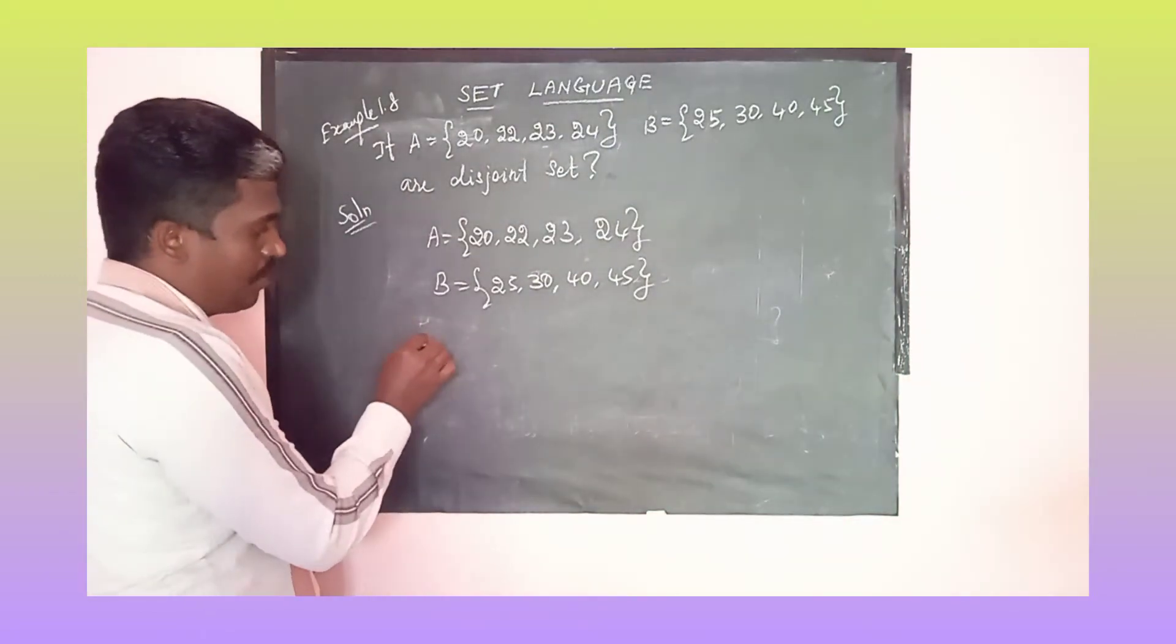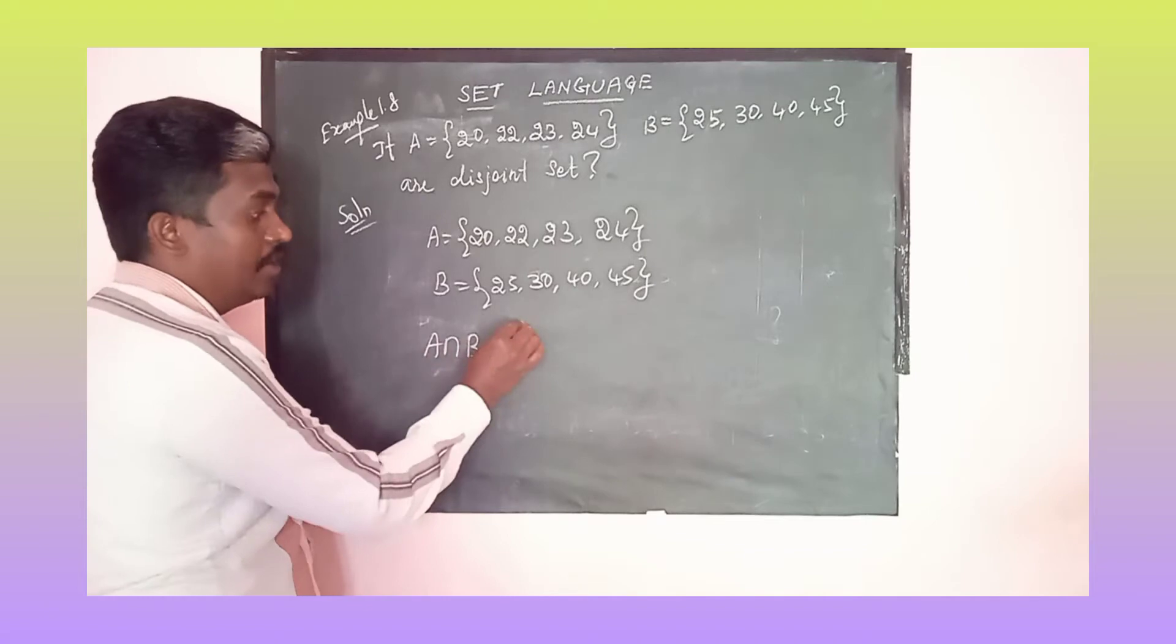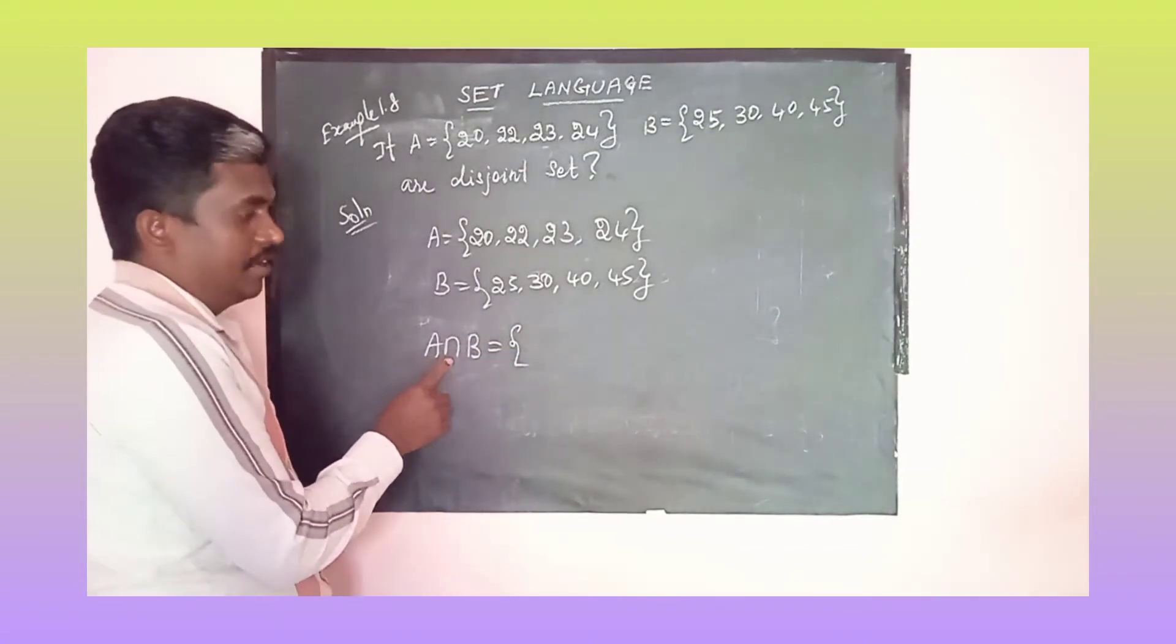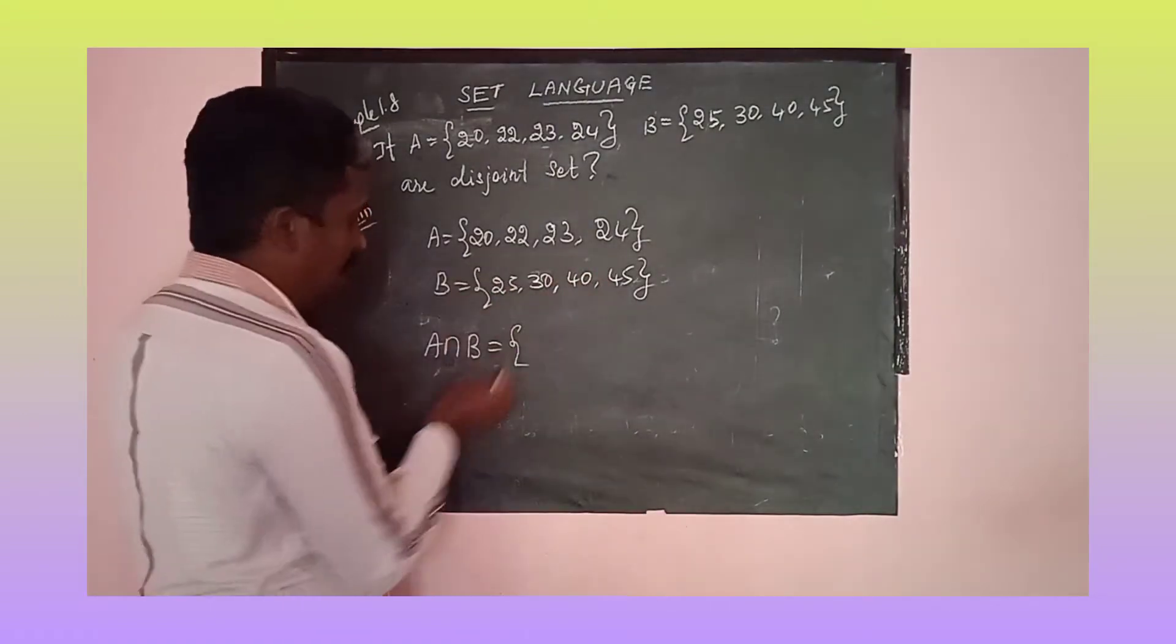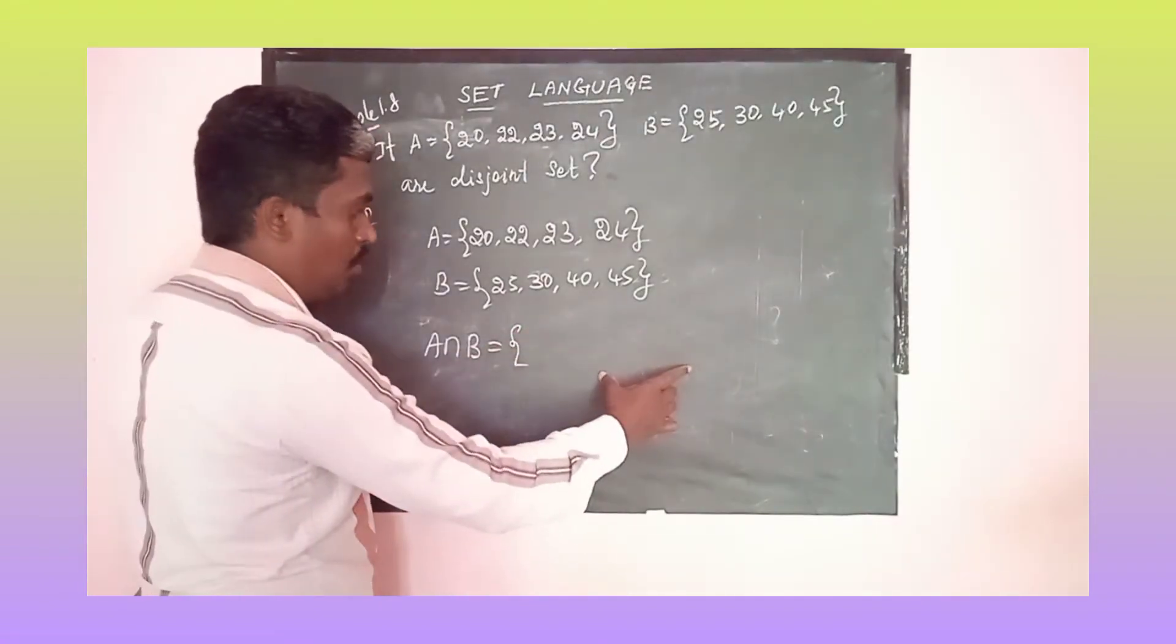First of all, we will see A intersection B. What is this? This is called intersection, A intersection B. We will write it the same way on both sides.